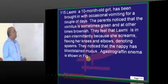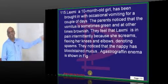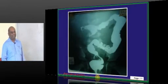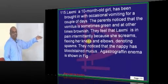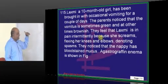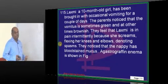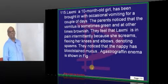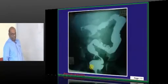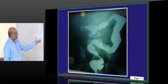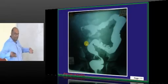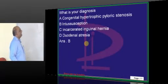A 10-month-old girl is brought with occasional vomiting. Without even looking at the image, from history alone you can tell — she is crying, there is intermittent pain, she screams flexing her knees and elbows, and there is currant jelly-like stool. What do you see on imaging? Claw appearance — because of intussusception: one part of gut entering into another part of the gut.